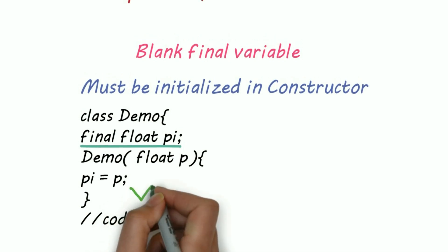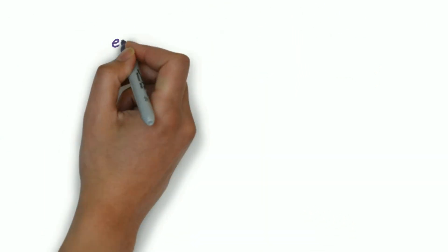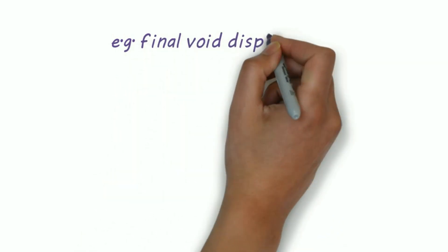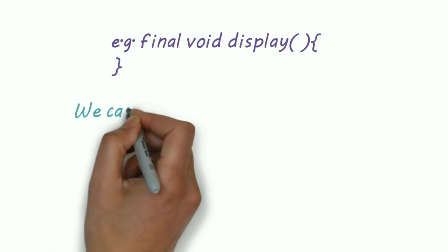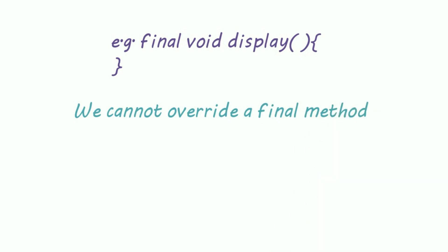Now let's see what are final methods. Again, the syntax is easy, just write the final keyword in front of the method declaration. So final void display. We cannot override a final method. That is, when you add the keyword final, then you cannot override that method. Let's understand this by an example.